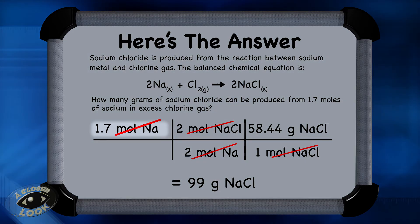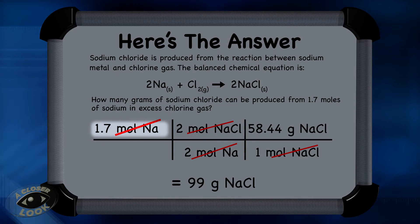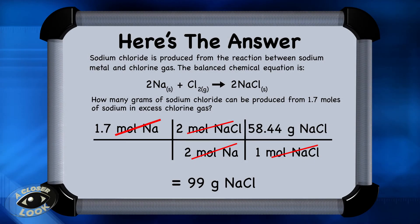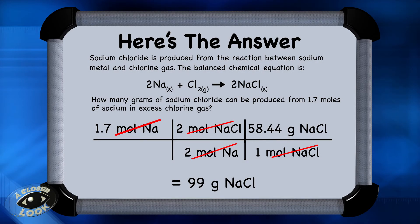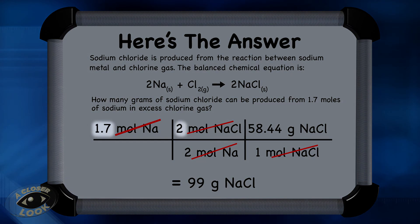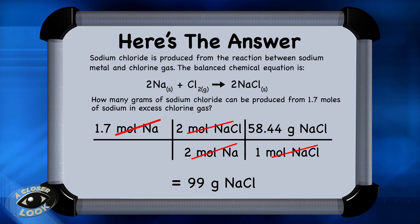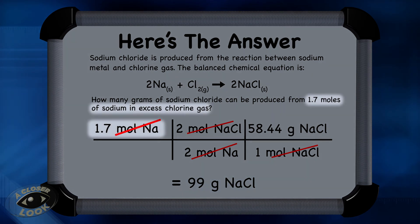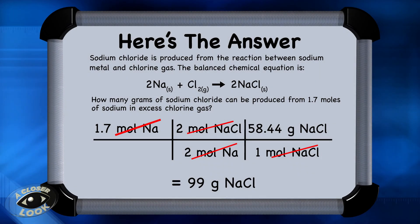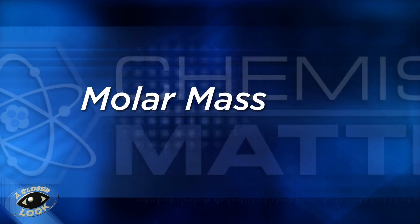Here is the setup for this problem. We took 1.7 moles of sodium and put it in the upper left-hand corner of the conversion chart, then brought the units down. We converted from moles of sodium to moles of sodium chloride — the 2s came from the coefficients in the balanced equation. We then brought moles of sodium chloride down and converted to grams of sodium chloride using the molar mass of 58.44 grams. When we multiply 1.7 times 2 times 58.44 and divide by 2, we find that 99 grams of sodium chloride can be produced from 1.7 moles of sodium in excess chlorine gas. Did you get it right? If you got 99 grams, that's great! That's a closer look at molar mass and converting moles to grams.